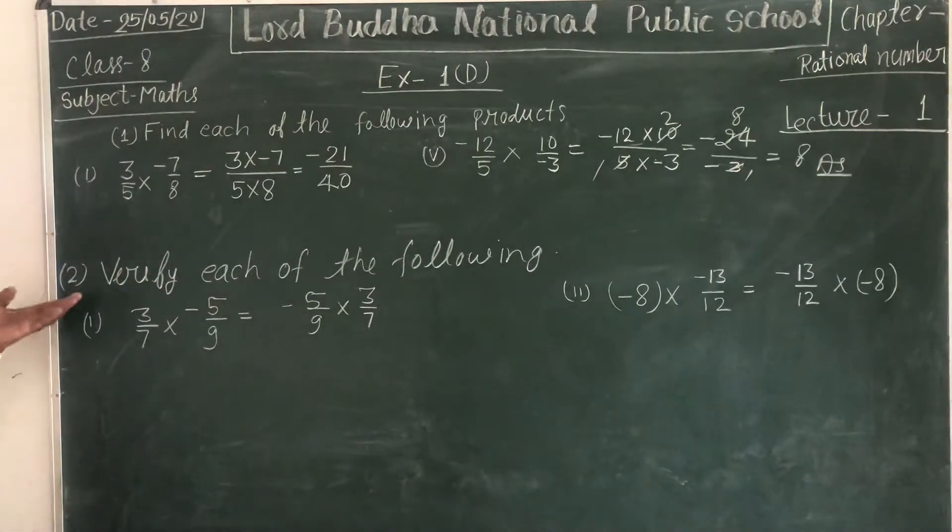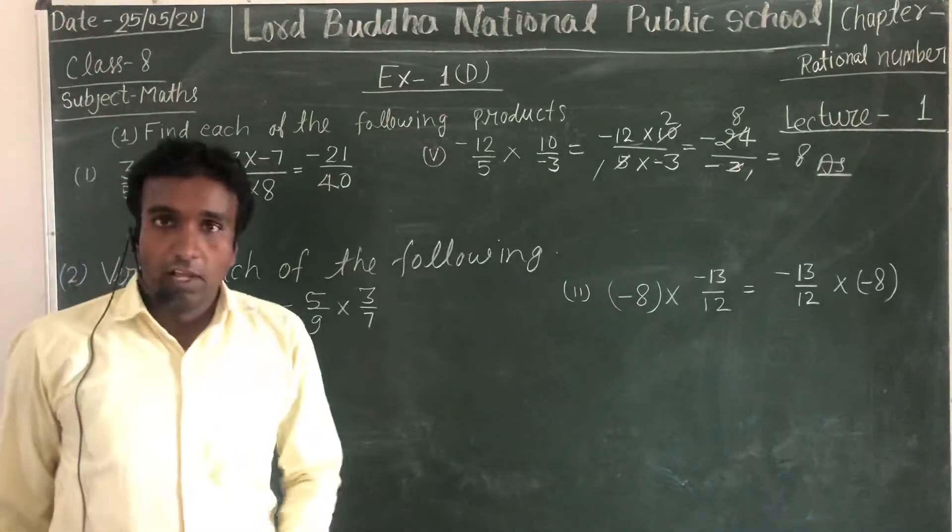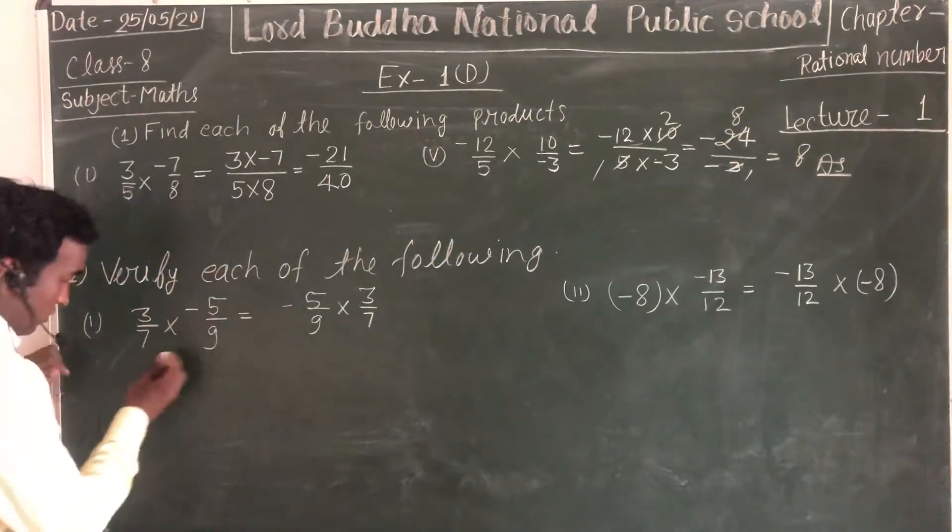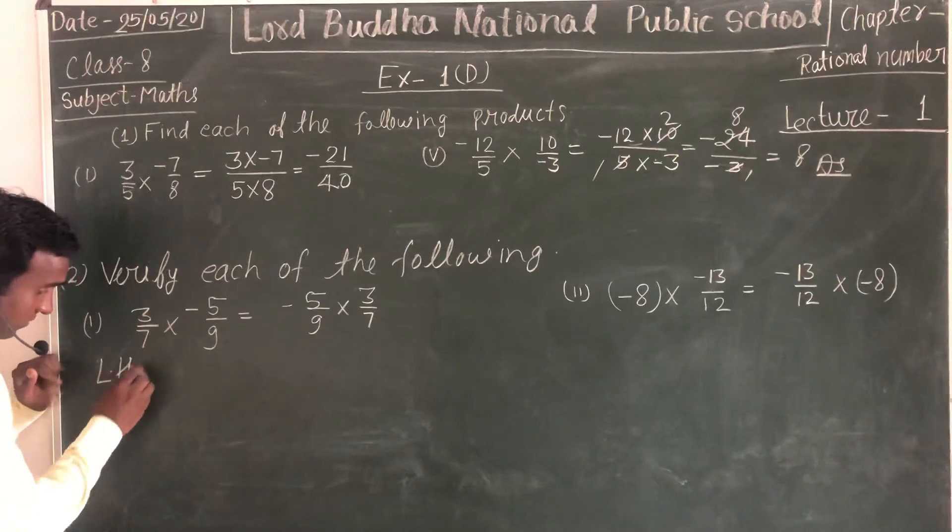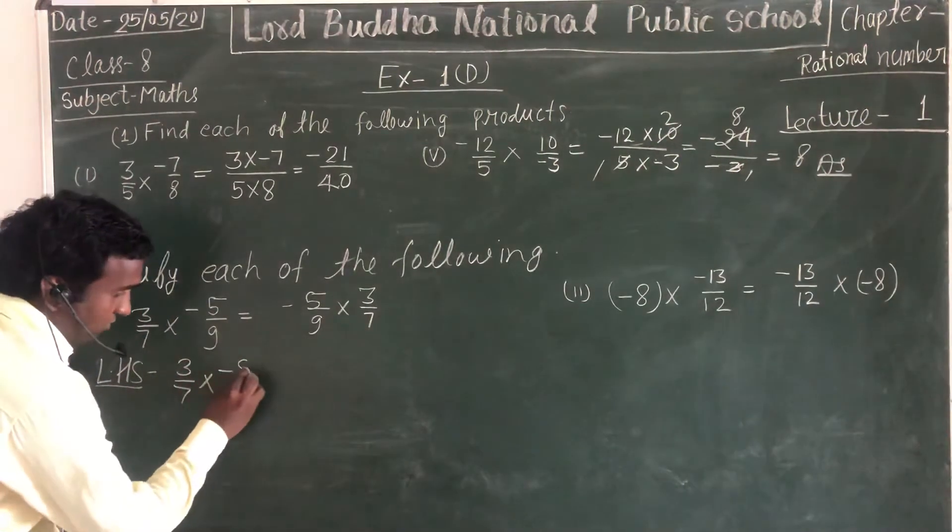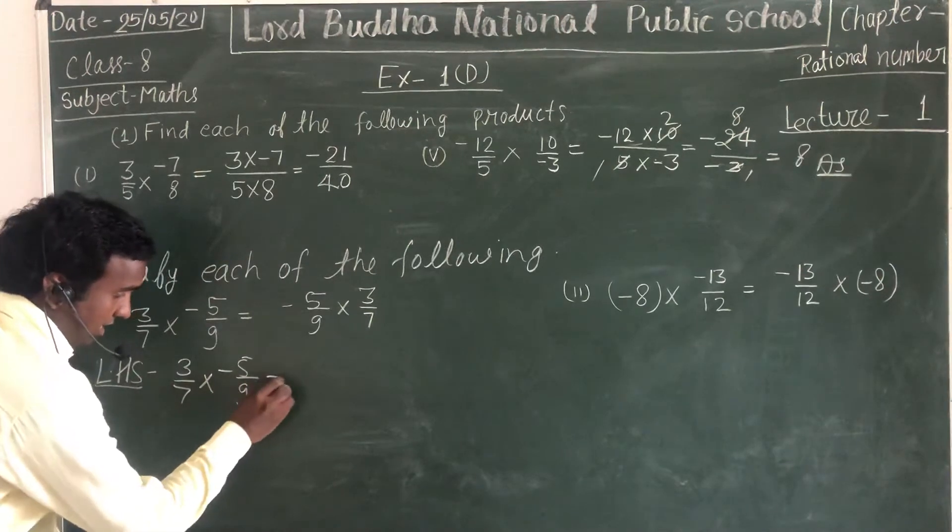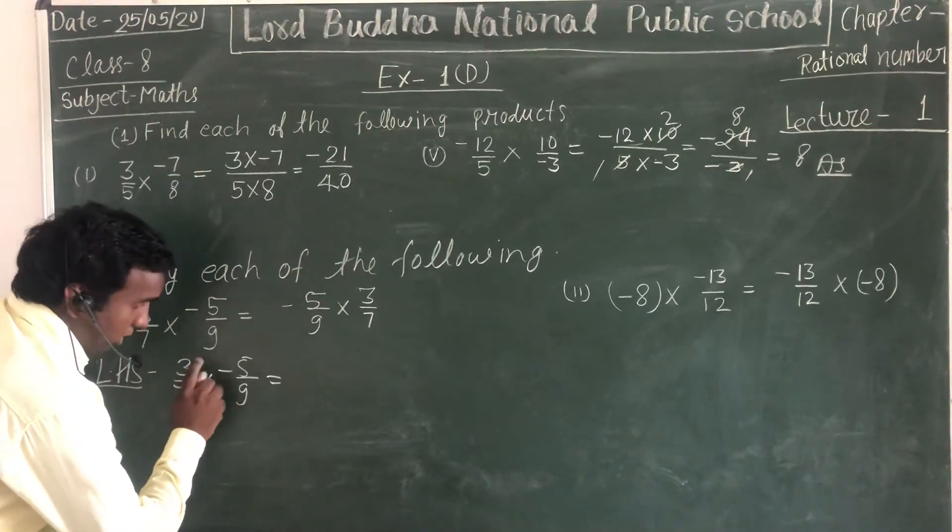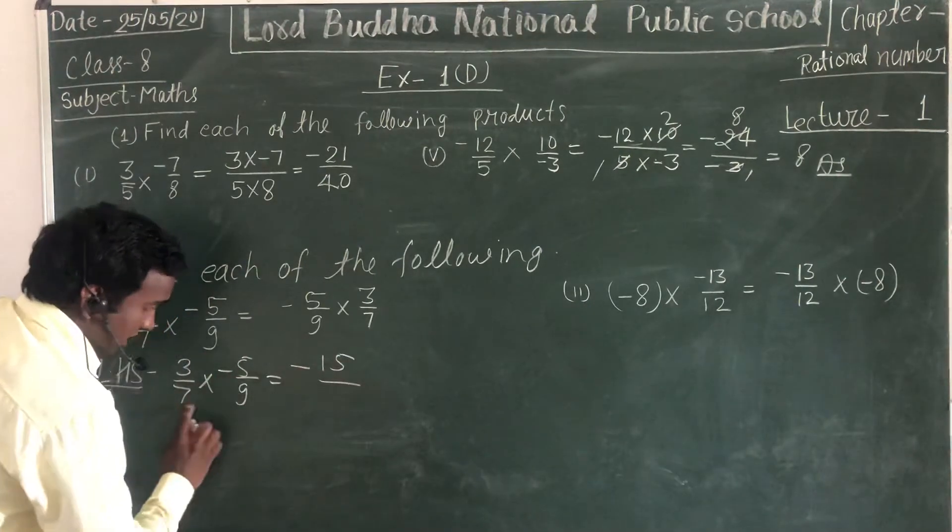Question 2: Verify each of the following. First, take the left hand side. 3/7 into -5/9. Numerator multiplied by numerator: 3 times 5 is 15. Denominator: 7 times 9 is 63. So we get -15/63 on the left hand side.